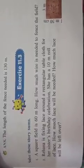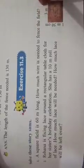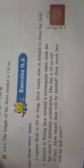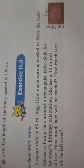Now look at the second question. Rihana has a rectangular table for her sister. It has lace on the sides of the table — a total of 10 meters of lace. The length of the table is 3 meters and the breadth is 1 meter 50 centimeters. If you convert it to meters, it will be 1.50 meters. Since the lace is used on all four sides, we need to find the perimeter.